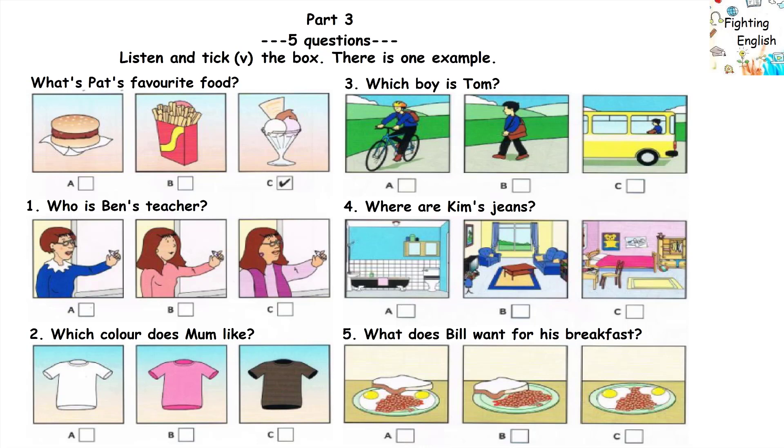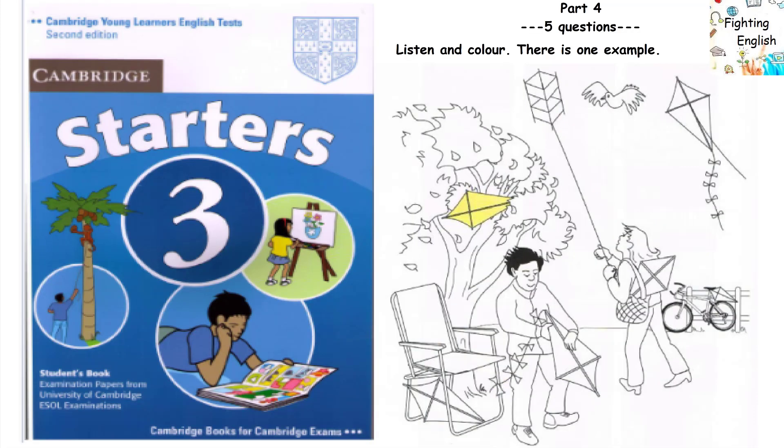That is the end of part three. Part four. Look at the picture. Listen and look. There is one example. There's a kite in the tree. Can you colour it yellow? It's yellow now. Can you see the yellow kite in the tree? This is an example. Now you listen and colour.